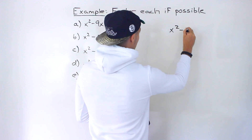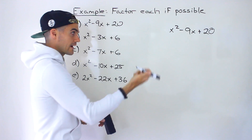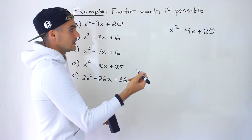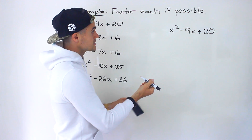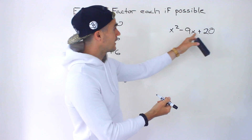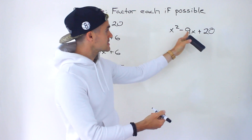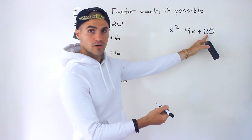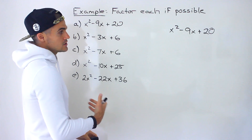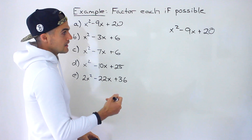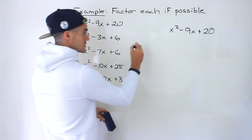We've got x² − 9x + 20. The first step with factoring: can we take out a greatest common factor? We have a 1, a negative 9, and a 20, so we can't take out any constants. We have an x variable in the first two terms but no x variable in the last term, so we can't take out any variables either. There's no greatest common factor we could take out, so let's see if we can factor this with decomposition.